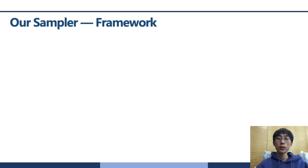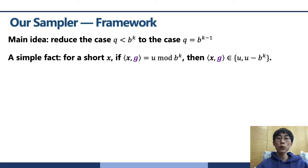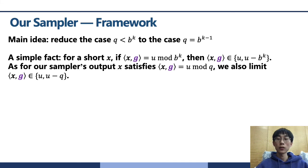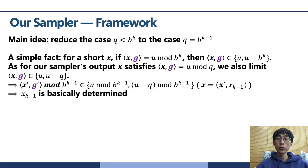Our gadget sub-Gaussian sampling is very different from GMP-19. Our idea is to convert the sampling for arbitrary modulus into the easy and fast sampling for power B modulus. There is a simple fact that for short x, if the inner product of x and g is equal to u mod q, which equals b^k, the inner product of x and g is in the set of u and u minus b^k. So if the inner product of x and g is equal to u mod q, we also limit it in the set of u and u minus q. Notably, the value of u and u minus q basically determines the most significant digit x_{k-1}.